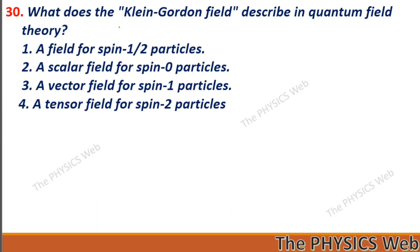Next: what does the Klein-Gordon field describe in quantum field theory? The Klein-Gordon field defines a scalar field for spin-zero particles. So, two is your correct option.